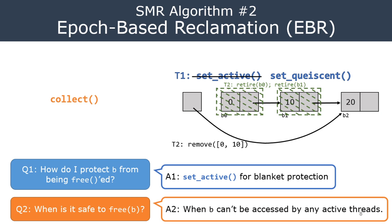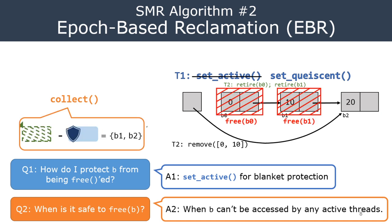setQuiescent is synonymous with setInactive — it finishes the ongoing active state and declares that the thread is not going to access the shared memory blocks. After setQuiescent is called, the collect function may free B0 and B1, because they are retired and no longer protected by T1. Since T1 already called setQuiescent, it no longer protects all pointers in a blanket manner, and in particular B0 and B1 are no longer protected, so the collect function may safely deallocate or free those two pointers.